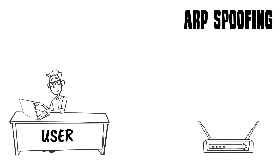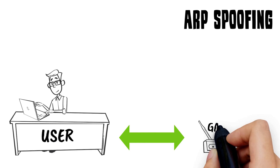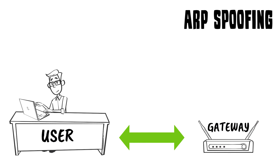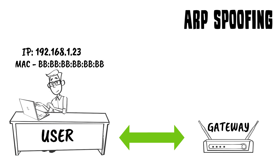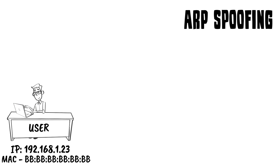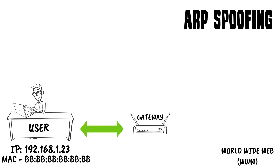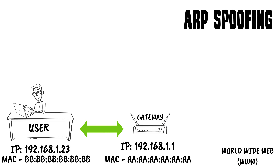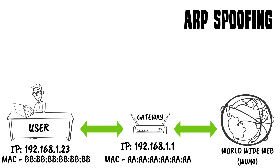In a normal connection, a user will connect to the intranet through a gateway that routes packets based on the internet protocol or IP address, which maps to a machine address code or MAC address. Each machine has a unique MAC and IP address. In this scenario, the user's IP is 192.168.1.23 and his MAC address is a series of B's. The gateway's IP is 192.168.1.1 and its MAC address is a series of A's.